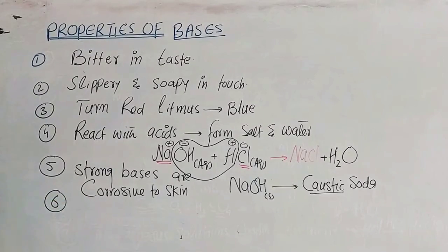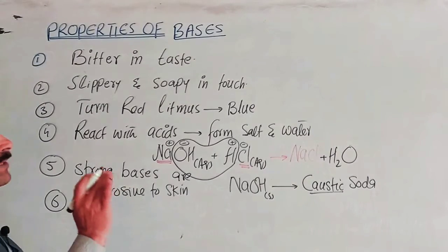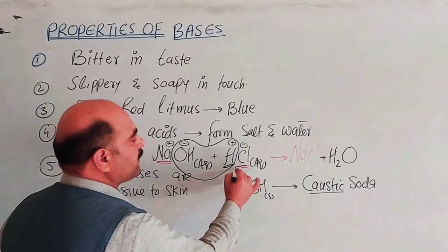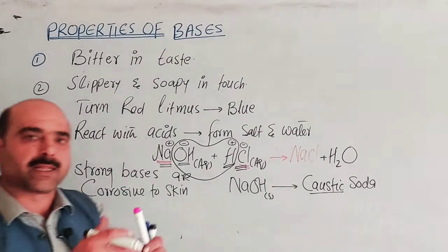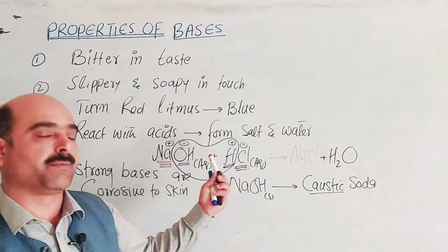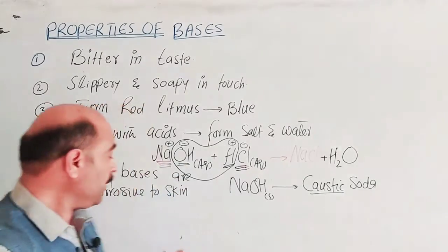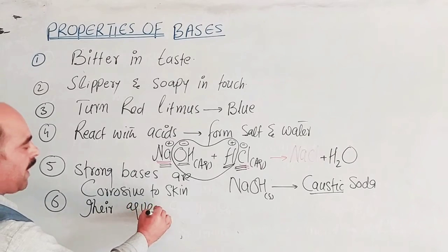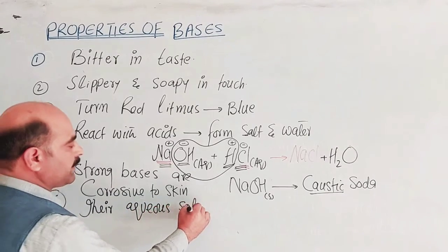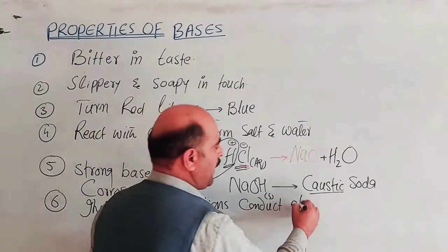Property number 6 of bases is that they are electrolytes. When base molecules dissolve in water, they dissociate into positive and negative ions. Their aqueous solutions conduct electricity because of the free movement of ions.